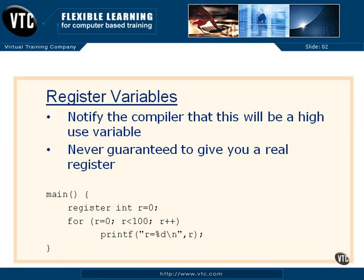Here's just a quick little stub to show you how it works. Open brace — register int r equals 0. And here we're going to use it 100 times and print out the value of r. No big deal, obviously, but this is how you say that you want an integer to be stored in a register. Again, absolutely no guarantee that you're really going to get a register, but what's the harm in trying? The compiler will just ignore you and go on, and use the registers for what it sees fit.